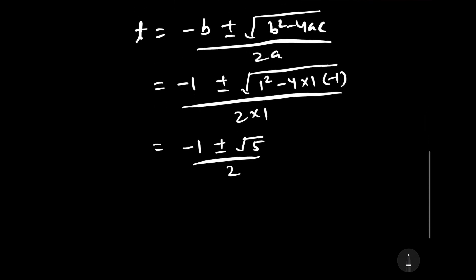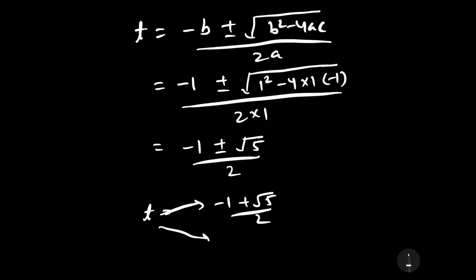So t has two values: (−1 + √5) / 2 and (−1 − √5) / 2.